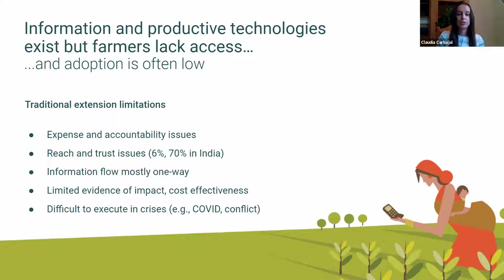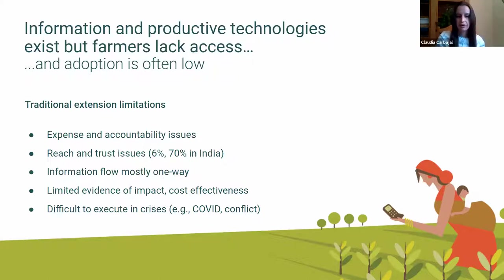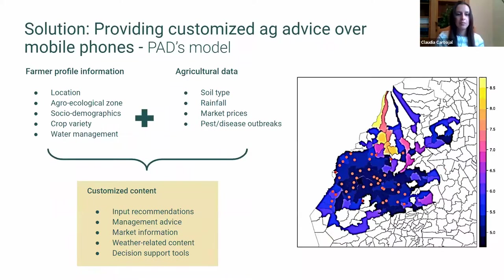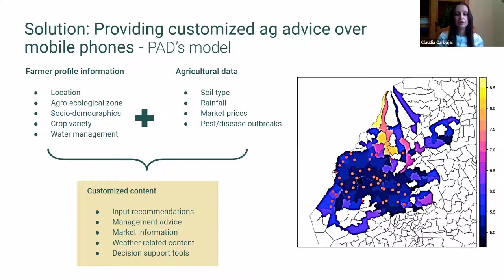The sectoral challenge is that useful information and productive technologies exist, but smallholder farmers often lack access to them. Most traditional in-person extension models have limitations — they are very expensive, and it's hard to reach, train, deploy, and monitor extension agents. It's also difficult to implement these models during a crisis like COVID or a conflict. PAD provides high-quality and customized agricultural advice through mobile phones, using information collected directly from farmers — location, agricultural concerns, crop variety — combined with publicly available agricultural data like soil type and pest and disease outbreaks.